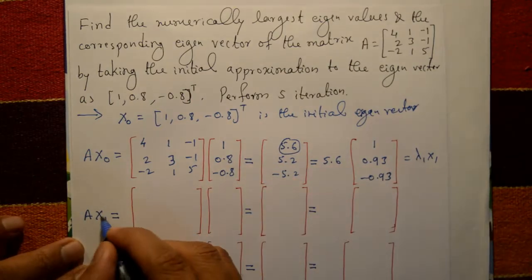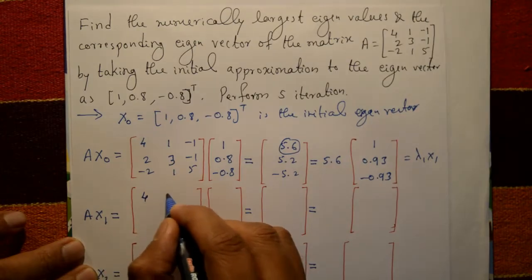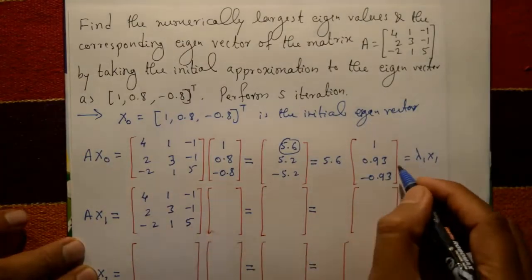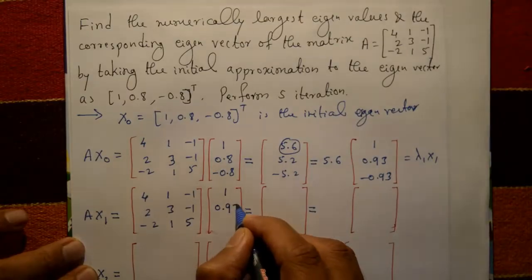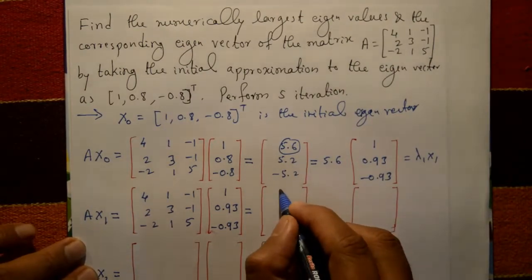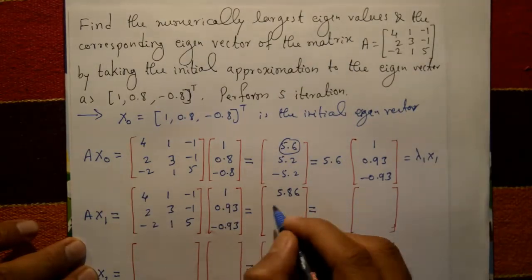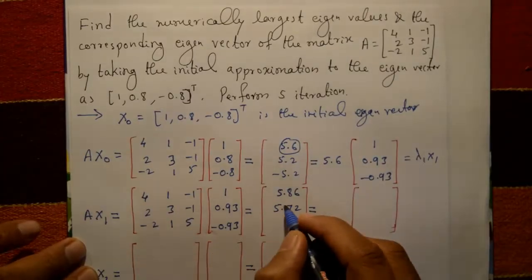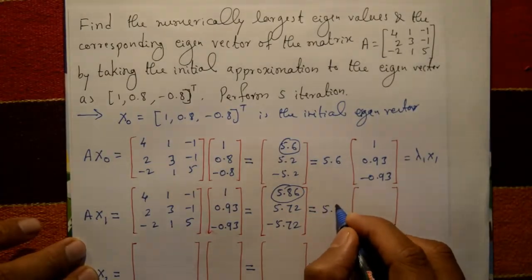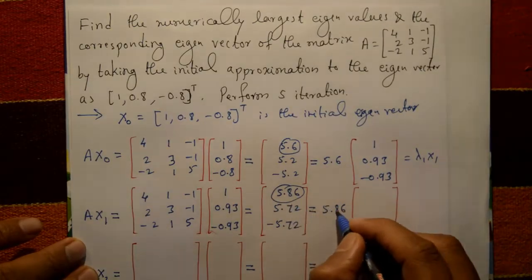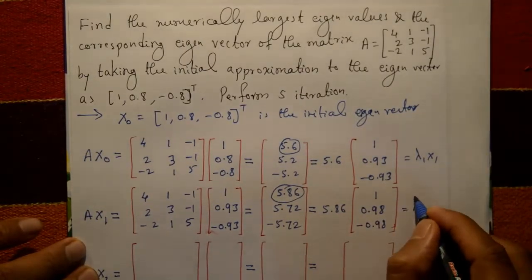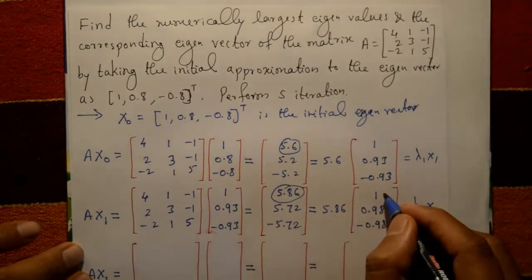Continue the step: compute A·x1. Matrix A is the same square matrix [4, 1, -1; 2, 3, -1; -2, 1, 5] and x1 = [1, 0.93, -0.93]ᵀ. After multiplication, the first row gives 5.86, second row 5.72, third row -5.72. The largest element is 5.86; taking it as common factor gives inside [1, 0.98, -0.98]ᵀ. This equals λ2 = 5.86 and x2 = [1, 0.98, -0.98]ᵀ.